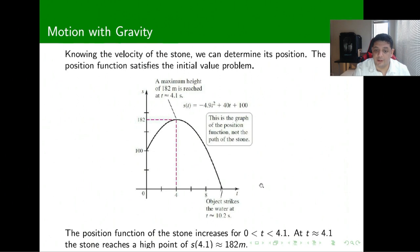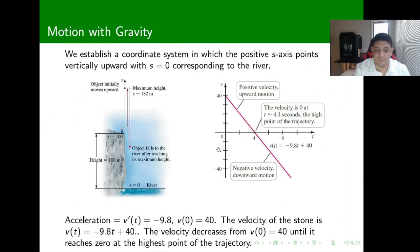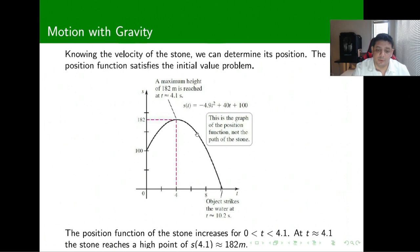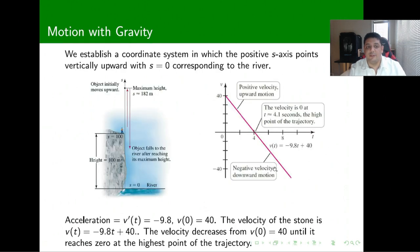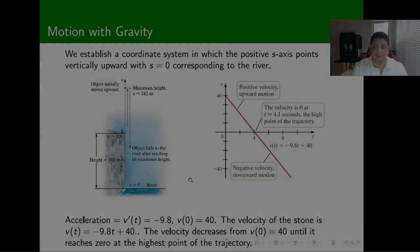You've seen this type of problem before. The only difference now is that we can get information backwards from the acceleration up to the distance. Finding the maximum height or where the object reaches the zero point is treated in exactly the same way. This is one of the applications we can do with antiderivatives, and this concludes Part 3 of antiderivatives.